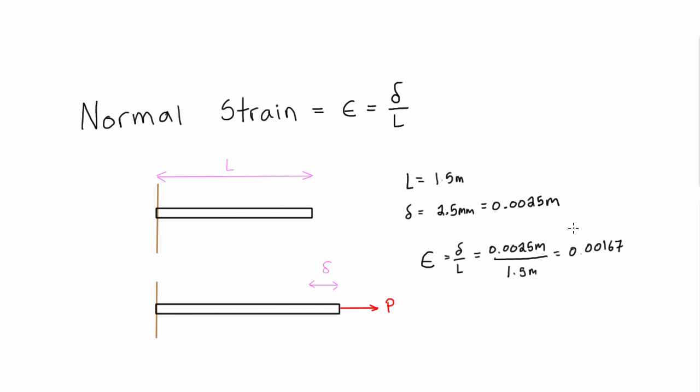So that's all the normal strain is—it's just the deformation of an axially loaded member divided by the original length of that member. You might be thinking about the cross-sectional area.